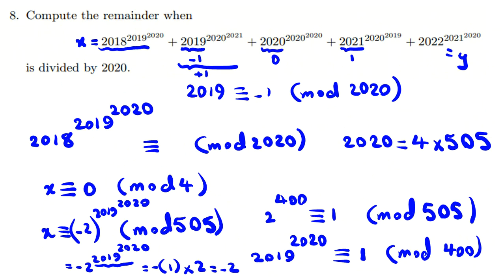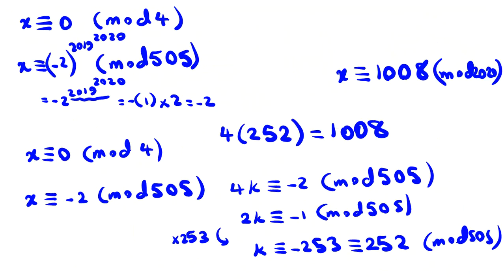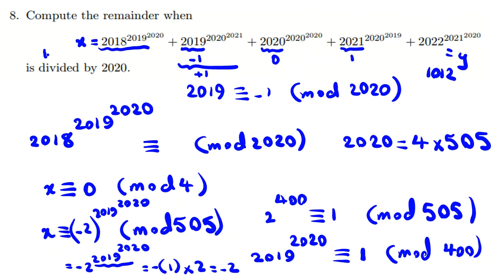So x = 1008 and y = 1012. Adding them: 1008 + 1012 = 2020, so the remainder when divided by 2020 is 2. The problem is finished.